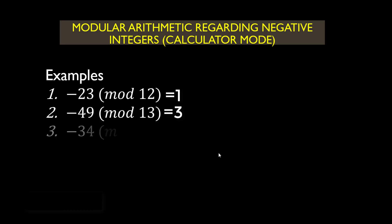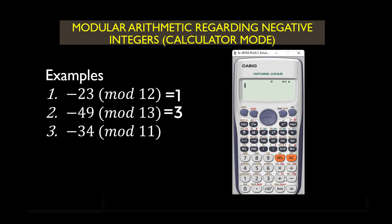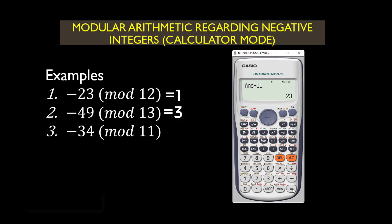Let's go to the last one: negative 34 mod 11. Type negative 34, press the equal sign, then AC. Press answer plus 11, and keep pressing the equal sign: negative 23, then negative 12, then negative 1, then positive 10. So negative 34 mod 11 is simply equal to 10.